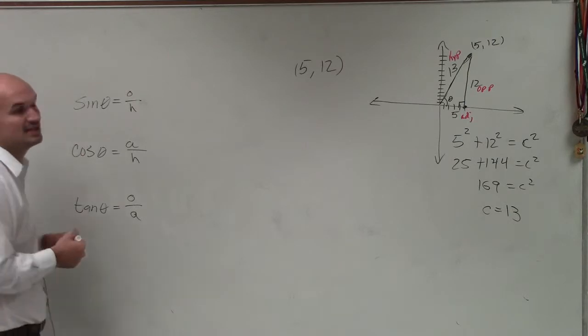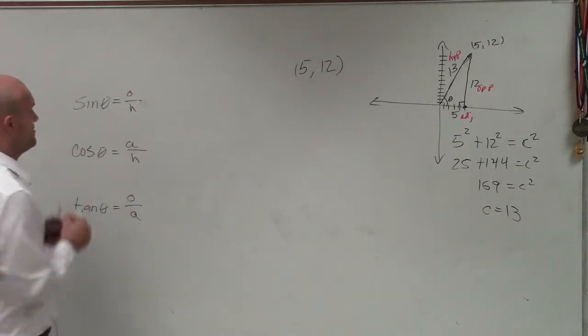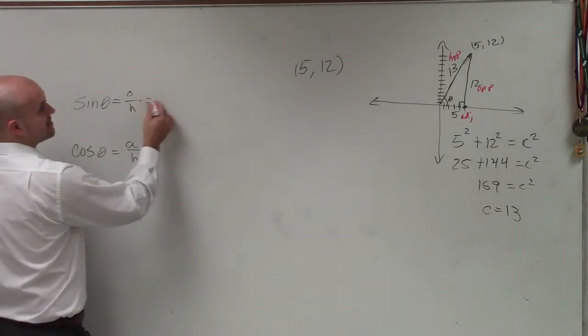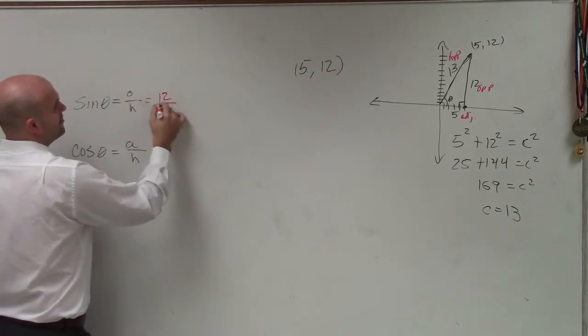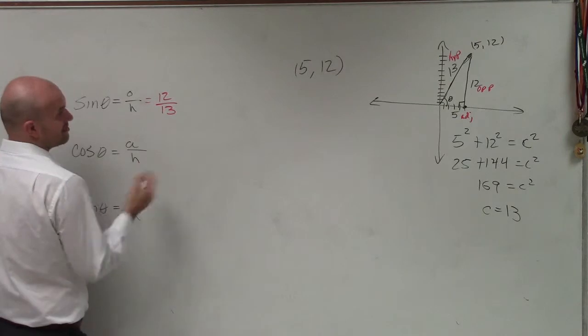So now, to solve these, I simply am just going to take these values and plug them in. So the opposite over hypotenuse will be 12 over 13, and I can't simplify that any further.